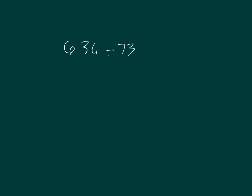Let's work through this problem. 6 and 36 hundredths divided by 73. That's about 6 and 3 tenths divided by 70, which equals 6.3 divided by 7, divided by 10, which equals 9 tenths, divided by 10, which equals 9 hundredths.